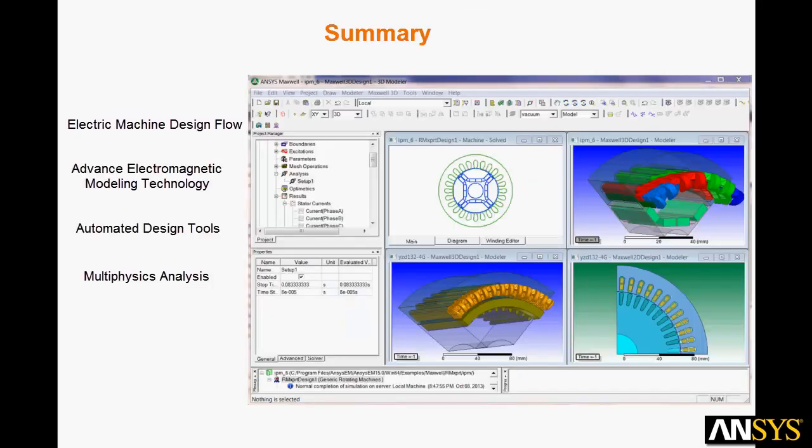In this video we introduced the ANSYS electric machine design flow that covers initial design to electromagnetics with multiphysics and systems. We have developed the most advanced modeling technology so that you can predict motor electromagnetic behavior accurately. Automated tools produce efficiency maps and torque speed curves and even provide you with optimal operating points. We showed you how you can use the multiphysics coupling analysis to predict thermal behavior, stress, and acoustic noise. Thanks for watching.